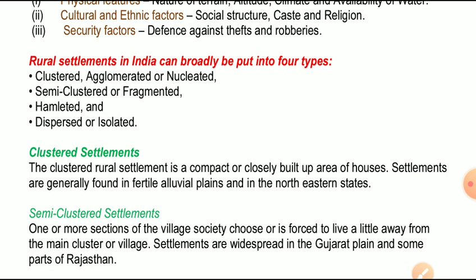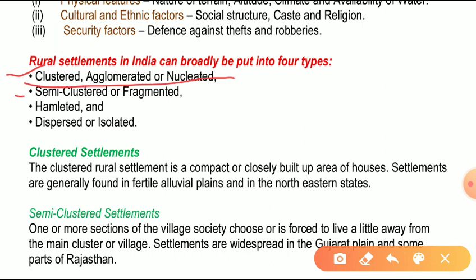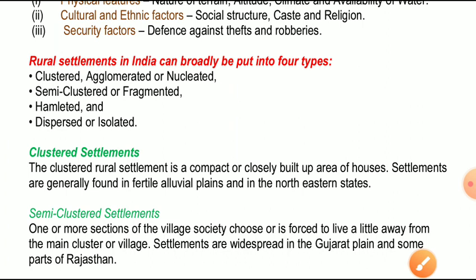Rural settlements in India can broadly be put into four types - जो भारत की ग्रामीण बस्तियां हैं उनको मोटे तौर पर चार भागों में बाँट सकते हैं। पहला है Clustered (Agglomerated/Nucleated), दूसरा Semi-clustered, तीसरा Hamleted, और चौथा Dispersed। Clustered settlement is compact and closely built-up area of houses, generally found in fertile alluvial plains and in the North-Eastern states. मतलब एक जगह बहुत built-up area होता है, घर एक-दूसरे से बहुत सटे हुए होते हैं।